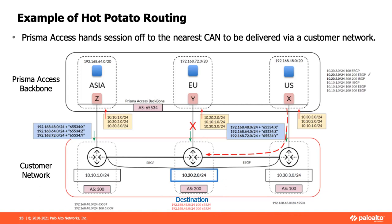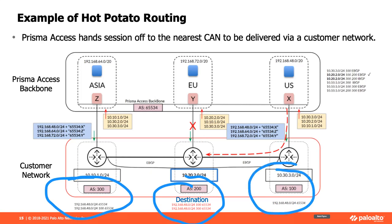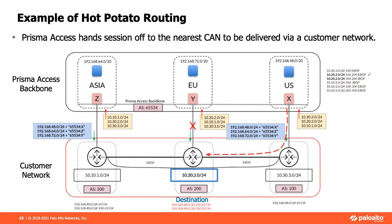Each branch — each remote network — is going to advertise the IP ranges available there via BGP. For example, over here in the U.S.: 192.168.48.0/24, with an AS number of 65534. That's the AS number for BGP — the autonomous system — basically the devices participating in BGP. We can tie into the customer's infrastructure using static routes or by integrating into BGP.